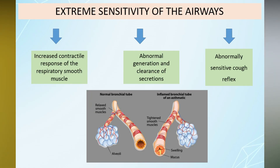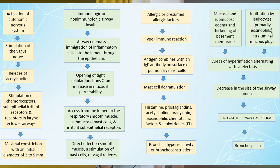Mixed asthma mainly results from respiratory tract infection, predominantly viral. Regarding pathophysiology, in asthma there is increased sensitivity of the airways due to increased contractile response of respiratory smooth muscle, abnormal generation and clearance of secretions, and an abnormally sensitive cough reflex. This occurs via activation of the autonomic nervous system resulting in maximal constriction, or due to immunologic or non-immunologic airway insults with direct effects on smooth muscle through stimulation of mast cells or vagal reflexes.